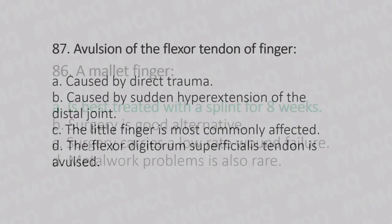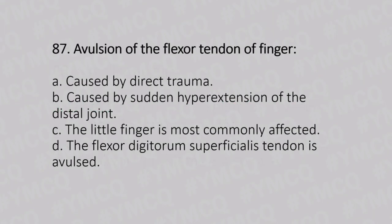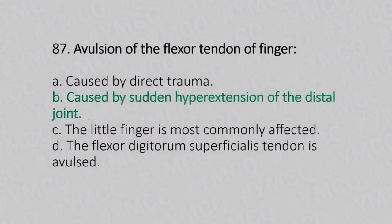Now let's move to question number 87. Avulsion of the flexor tendon of the fingers. Option A: caused by direct trauma. Option B: caused by sudden hyperextension of the distal joint. Option C: the little finger is most commonly affected. Option D: the flexor digitorum superficialis tendon is avulsed. And the answer is Option B, caused by sudden hyperextension of the distal joint.